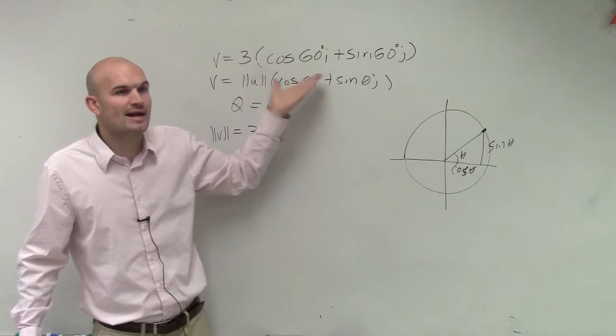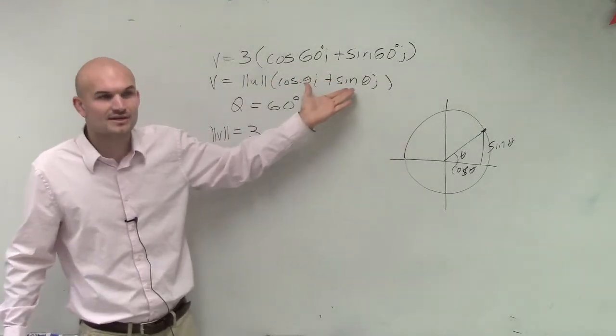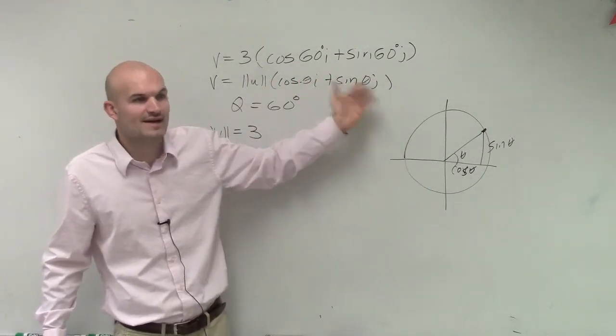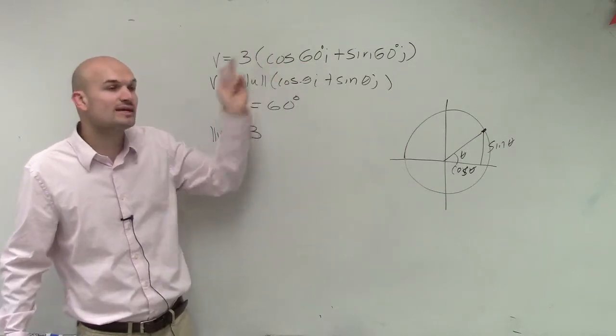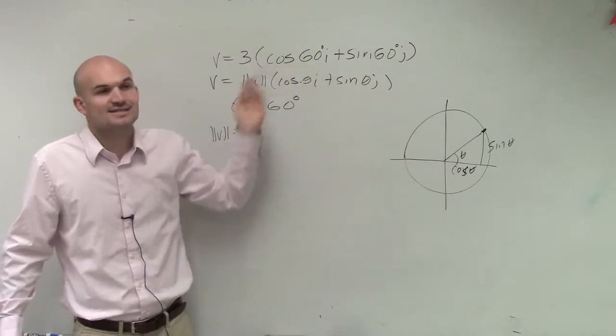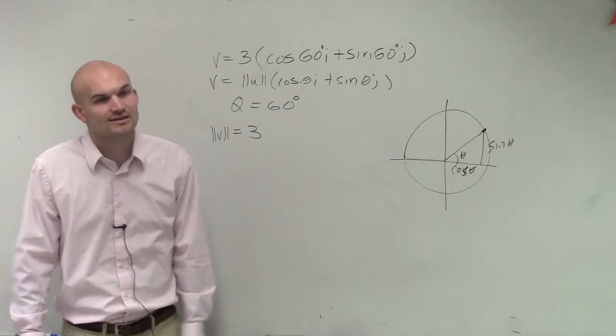So what I want you to do is this is how you can write out any other vector. This is just another way of looking at a vector. So if I give you 3 and 60, you need to understand 3 is representing the magnitude and 60 is representing the angle of that vector.